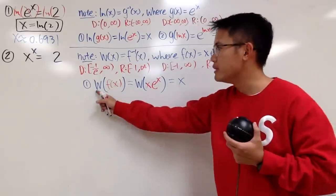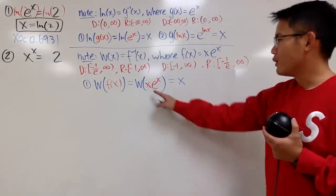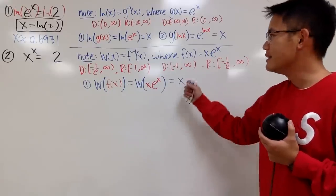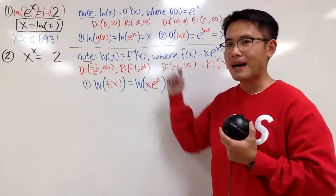And then if you apply w to this, you get just x back. Why? Because w is the inverse of f. So, once you apply w to this expression, you get x back. And you see, this is really similar to that, but more powerful.